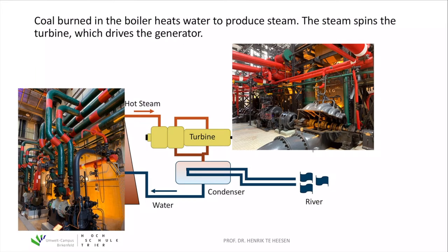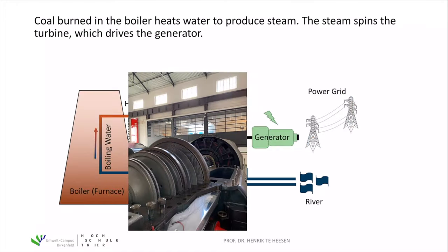Then we need to transport the hot steam to the turbines. You see all these tubes here in the two pictures to drive the turbines. We have the generator — the hot steam runs through the generator and drives it, producing rotation. And the rotation in the magnetic field induces electricity that we can feed to the grid.